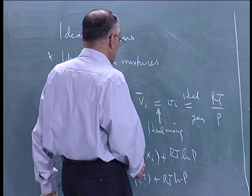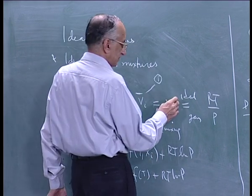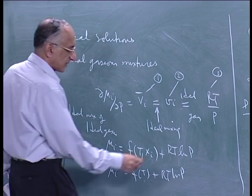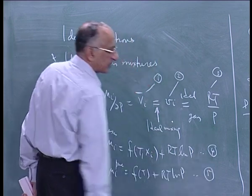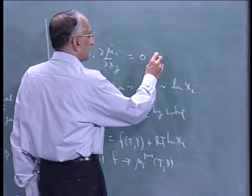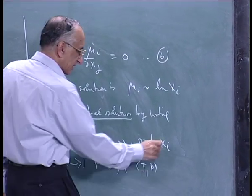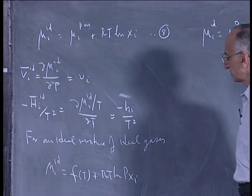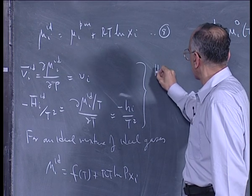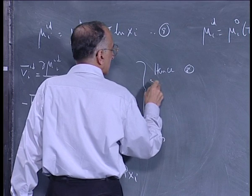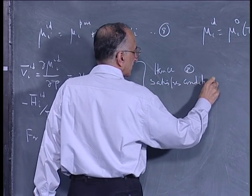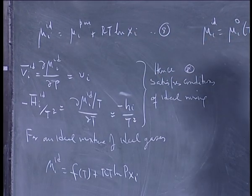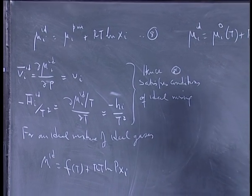From this equation — let me number these — this proves that the definition satisfies the conditions of ideal mixing: delta V mix equal to 0 and delta H mix equal to 0.